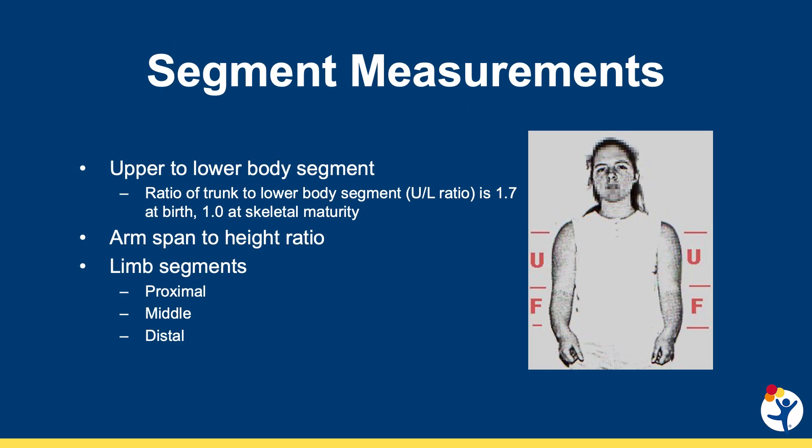Physical exam is best performed starting with segment measurements, the easiest of which is an upper to lower body segment measurement. The provider measures the distance between the pubic symphysis and the floor, and taking the difference from overall height gives you the trunk length and the lower body segment. In infants, this is generally a ratio of 1.7, meaning the child has much more trunk length than lower extremity length. In the adult, this becomes a 1-to-1 ratio. Beware that upper-to-lower body ratios differ as the child grows and matures.